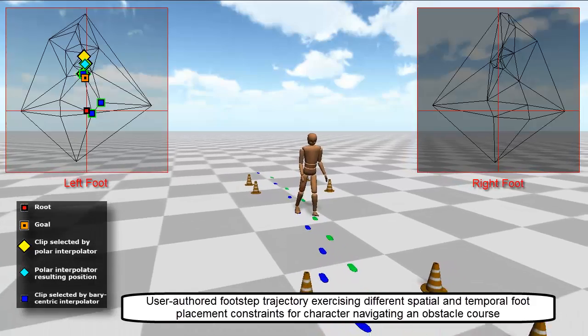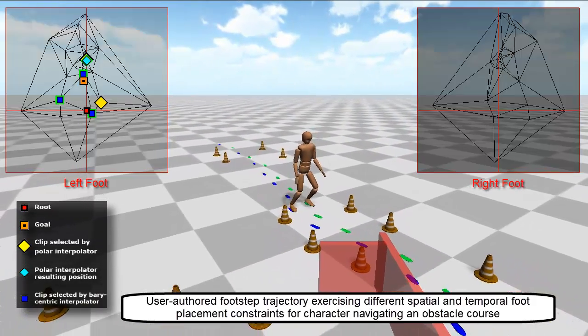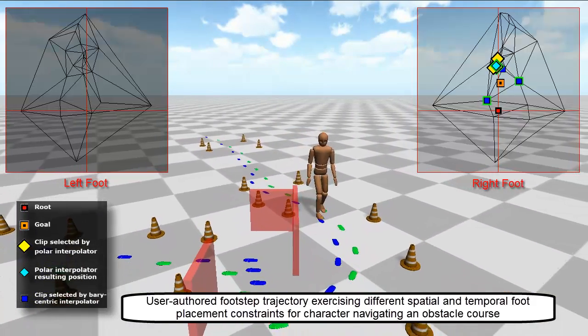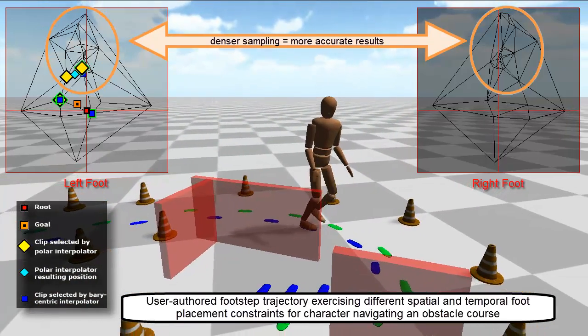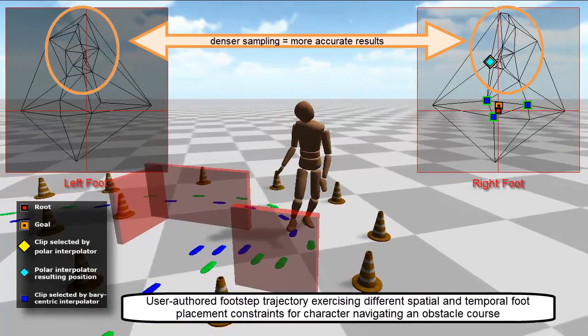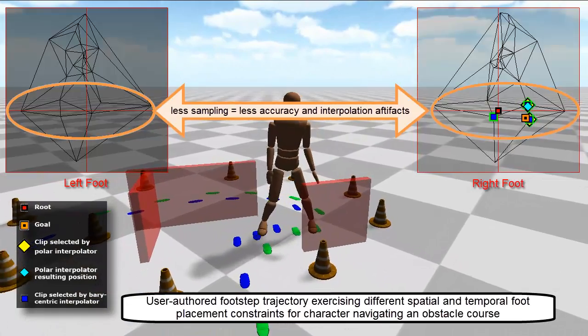This video shows a character following a user-authored footstep trajectory. The quality of the results depends strongly on the quality of the clips available from the motion capture library. Areas with denser sampling of example steps will provide more accurate results. As can be seen in the video, the least precise movements in our results are side steps and back steps.